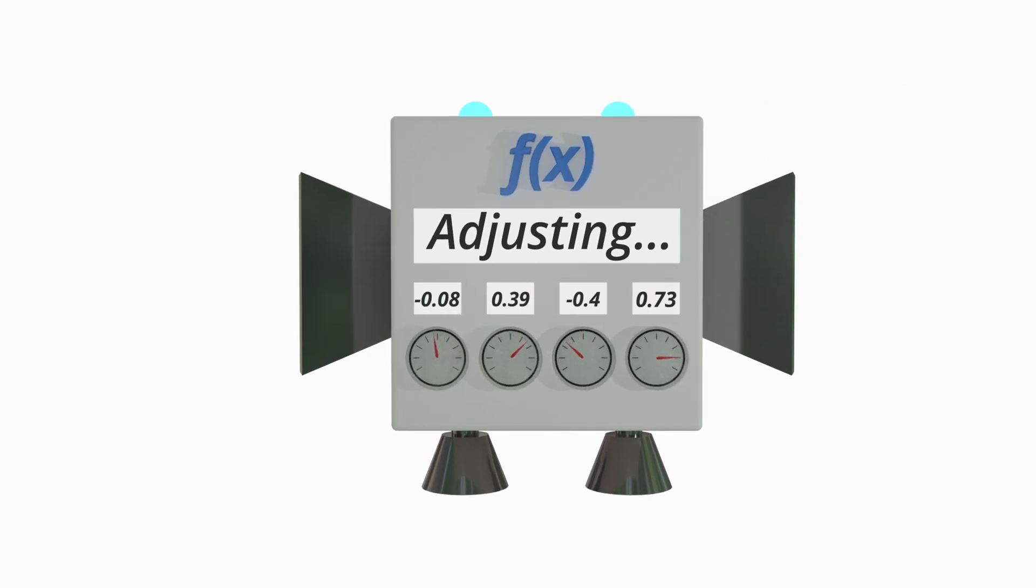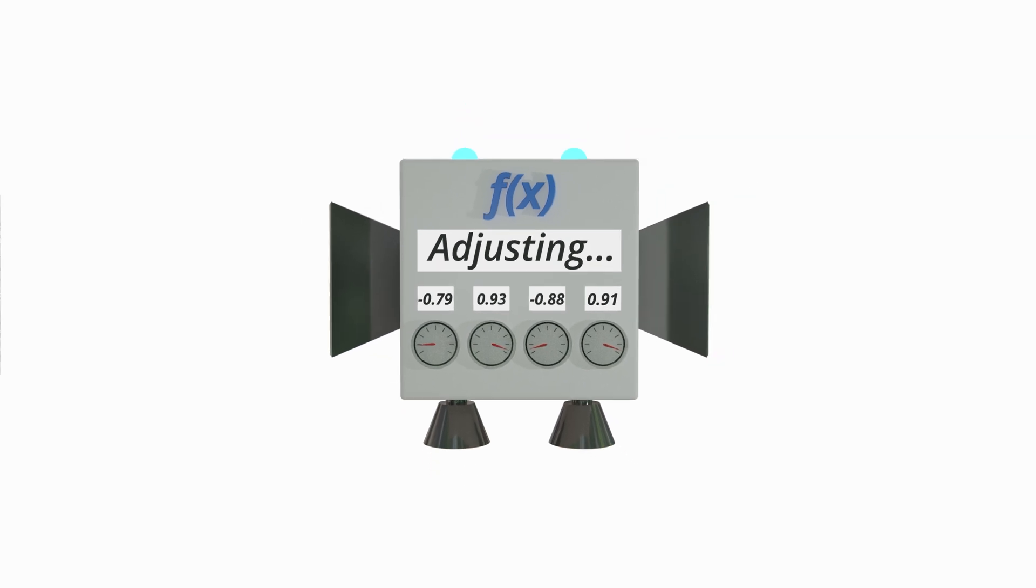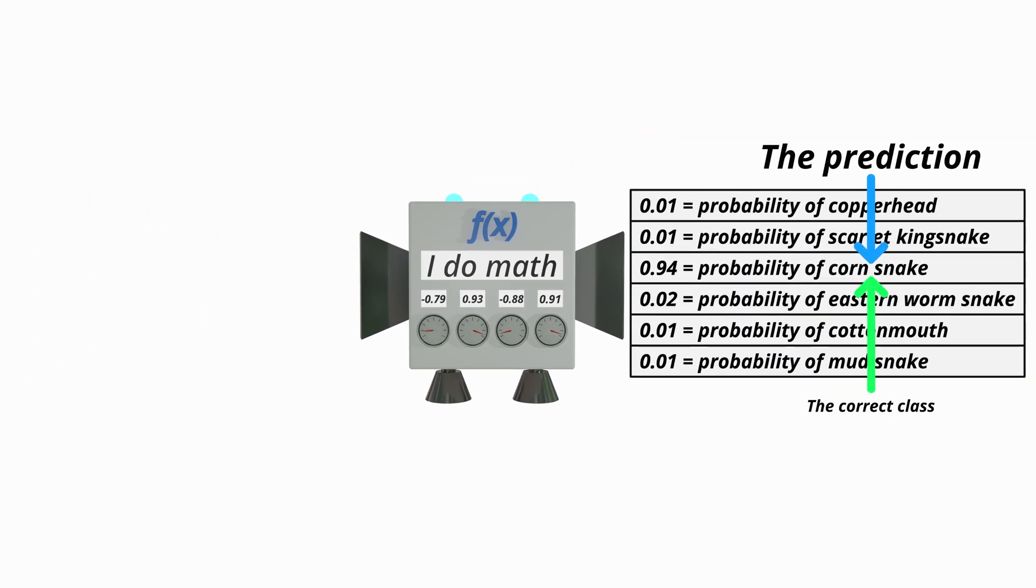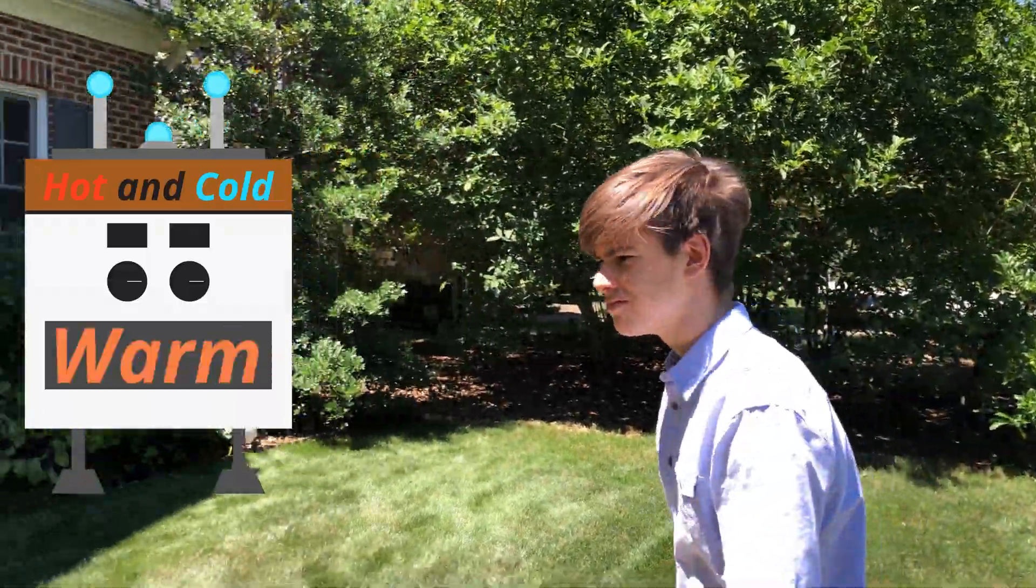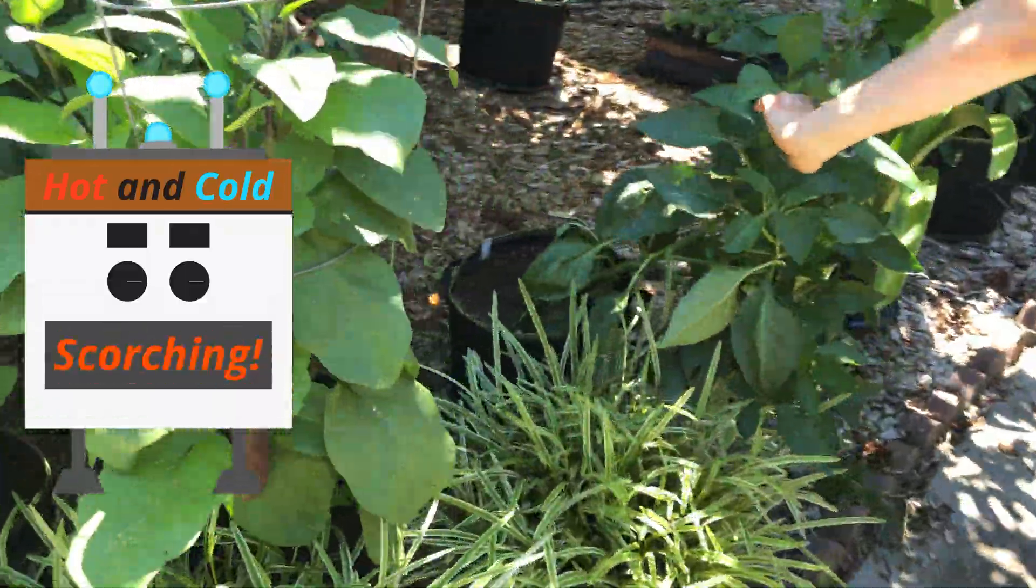Then, based on the accuracy of its predictions, the mathematical model can repeatedly self-adjust to find the correct answers, a lot like in the game Hot and Cold, where you repeatedly use information about how close you are to find the hidden object.